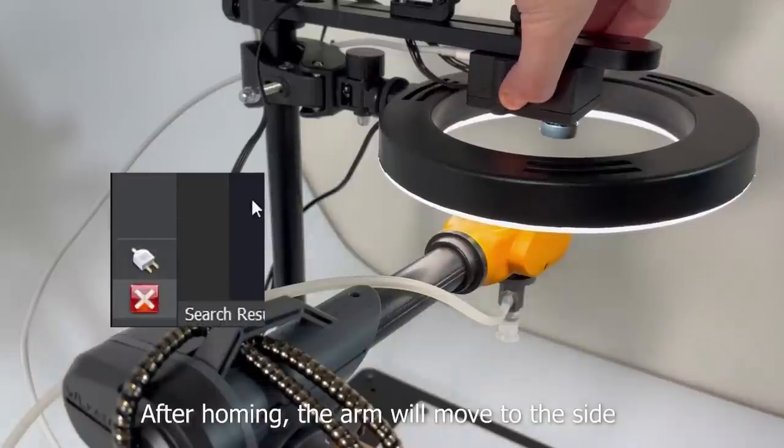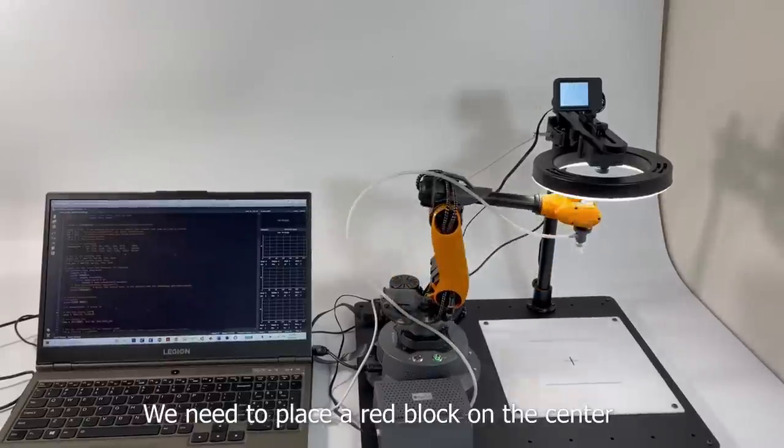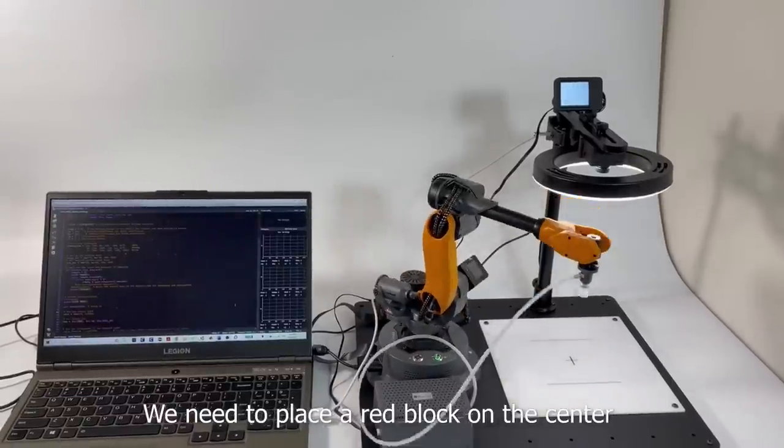After homing, the arm will move to the side. We need to place a red block on the center of the calibration board.